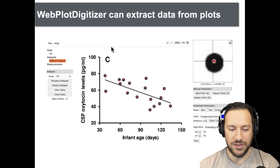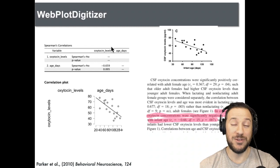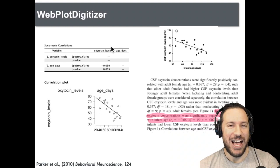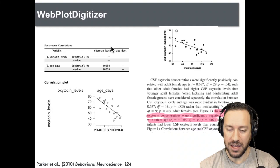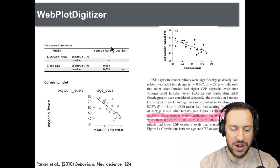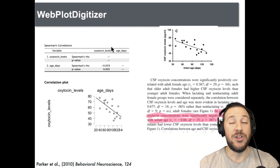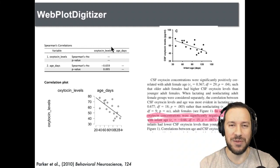In this particular study the data was actually reported, so we can compare WebPlotDigitizer's output with what was reported in the paper. The results were extremely close. I've validated this a few times and it's almost always the same, as long as the scatter plots don't have too many overlapping points. That's a really good way of extracting data from your particular study.